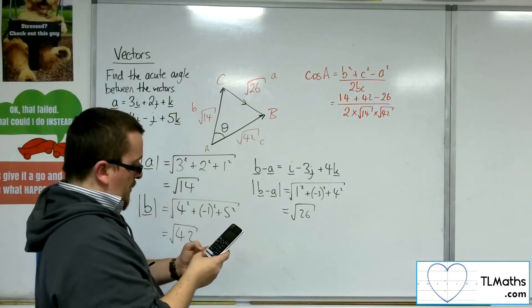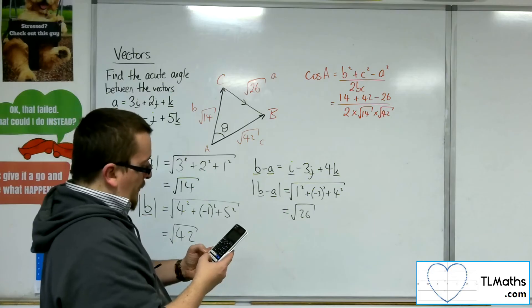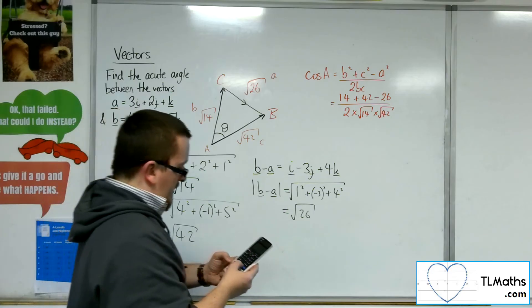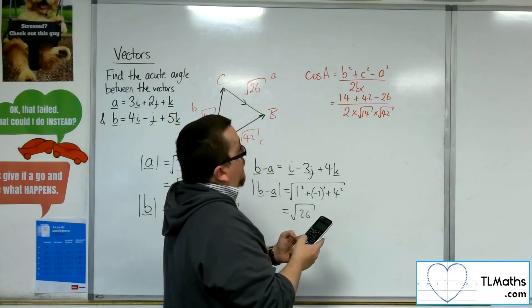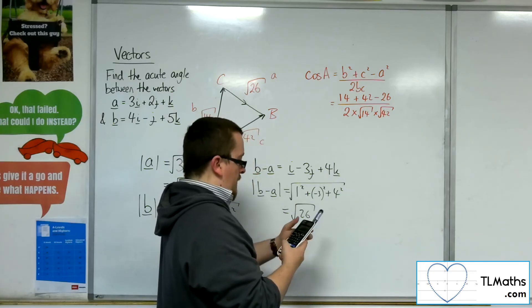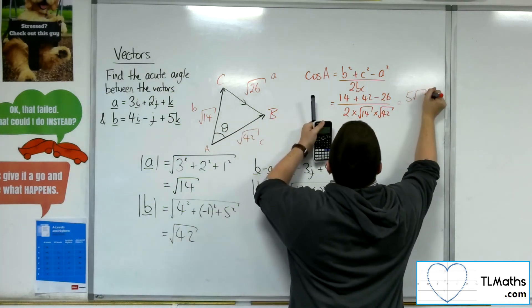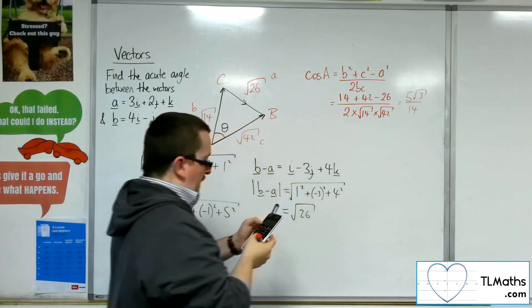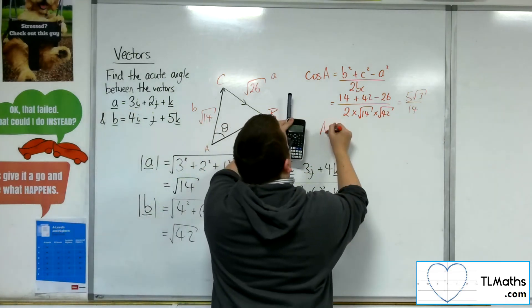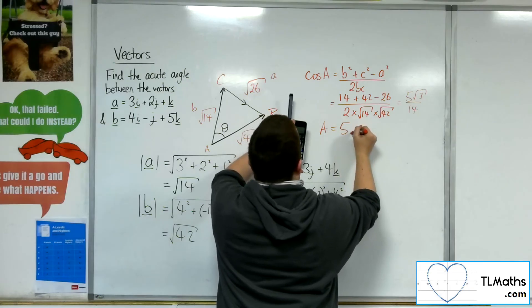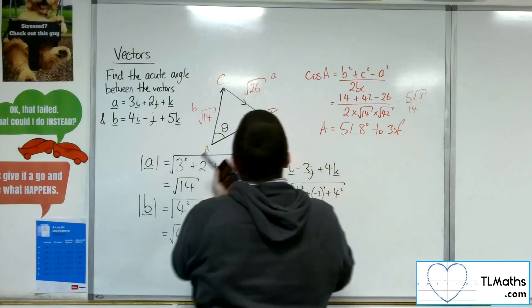So 14 plus 42 take away 26 over 2 times root 14 times root 42, and I get 5 root 3 over 14. So I want to inverse cosine that, and I get A as 51.8 degrees to 3 significant figures.